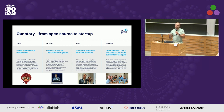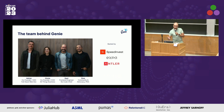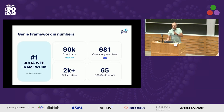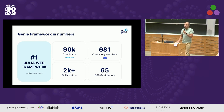We managed to secure some funding to increase growing Gini and bring it to the next step. This is the team behind Gini: Adrian, Cinzia, Dani who's our co-chief, and myself. We are backed by some of the top venture capitals in the software and data industry. The Gini framework, since its inception to today, has become the number one web framework in Julia, with thousands of downloads, over 2,000 stars on GitHub, and an active community of users and developers.